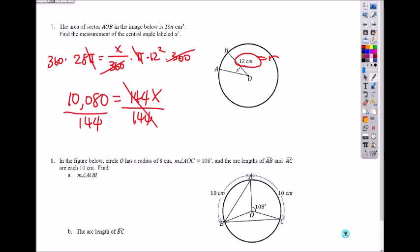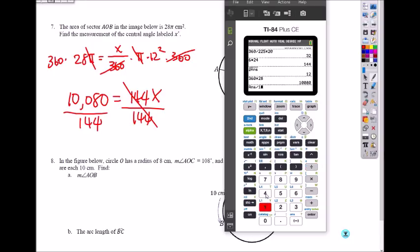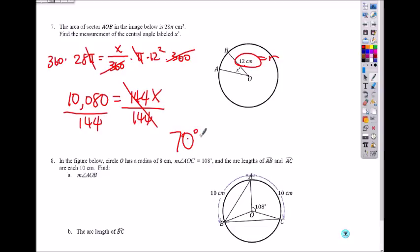So now you divide by 144 on both sides. So you get that divided by 144. That's 70. So that is 70 degrees for the central angle right here.